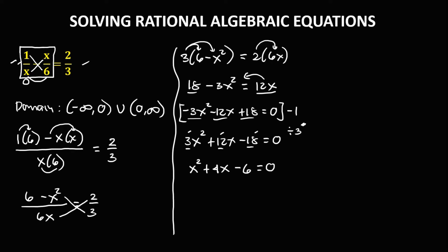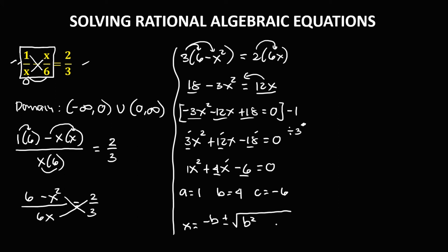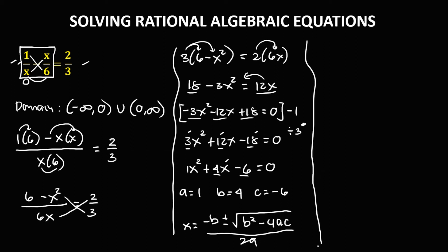To solve this quadratic equation, we use the quadratic formula. Here a is 1, b is positive 4, and c is negative 6. The formula is x equals negative b plus or minus square root of b squared minus 4ac, over 2a.